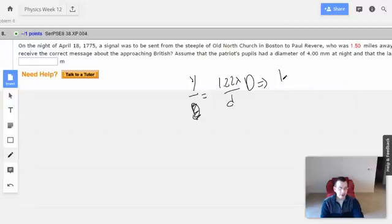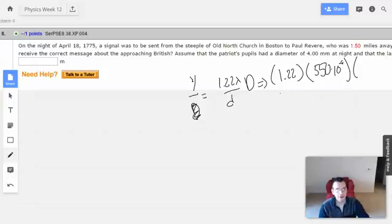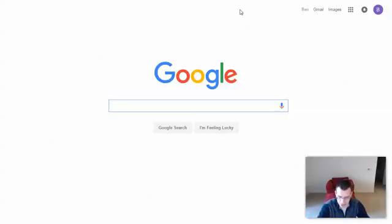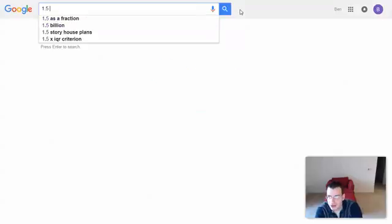And we're going to have 1.22 times lambda, which is 550 times 10 to negative 9 meters, times a distance of 1.5 miles, which is like 3,000 kilometers. 1.5 miles in meters.